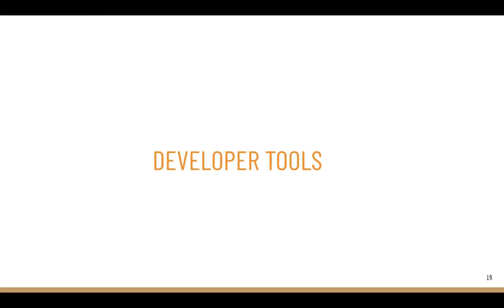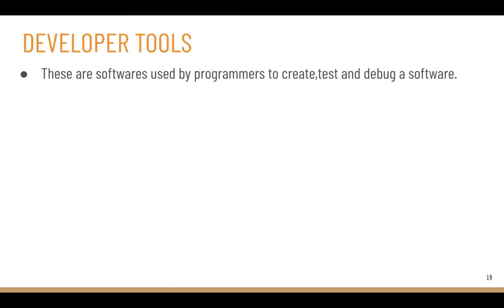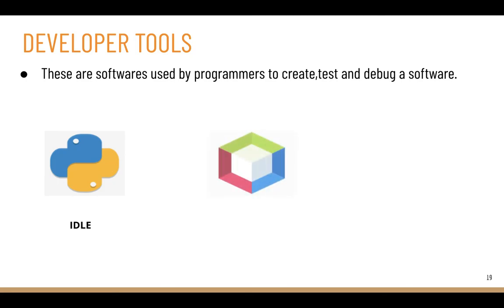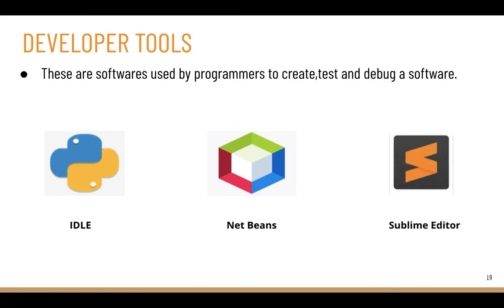Finally, let's look at developer tools. These are softwares used by programmers to create, test, and debug software. For example, if creating a program with Java, you'd use NetBeans; for web programming, you might use Sublime Text editors. Debugging means correcting errors that arise when you develop a program. Developer tools provide the facility for creating programs, testing them, and debugging the software in case of any errors.